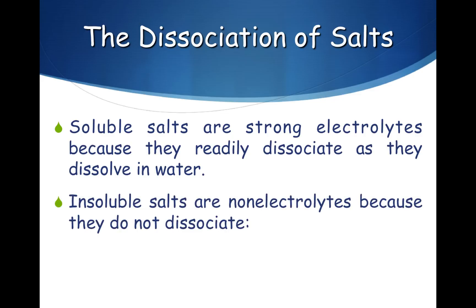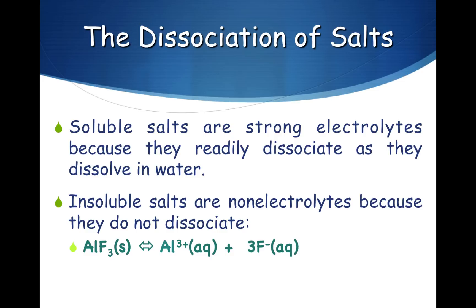Insoluble salts are non-electrolytes because they do not dissociate when they dissolve in water. Consider, for example, the dissociation reaction for aluminum fluoride. Aluminum fluoride is an insoluble salt, which means that it establishes equilibrium with its ions. Its equilibrium lies to the left, favoring the formation of solid aluminum fluoride. And even though it has the potential to produce one aluminum ion and three fluoride ions for a total of four ions on the right side of the equation, it does not. Because aluminum fluoride is insoluble, it does not readily produce ions — therefore, it is a non-electrolyte.